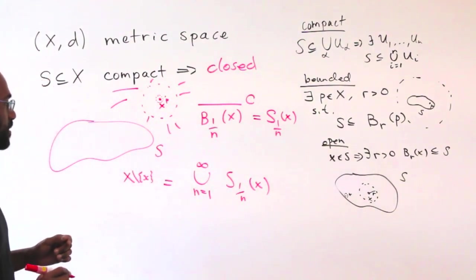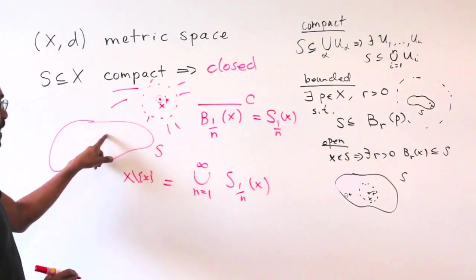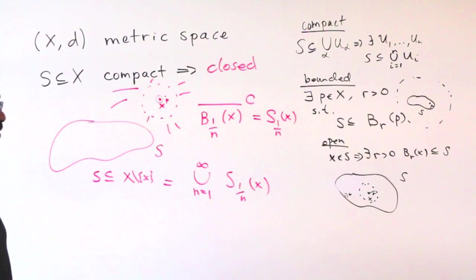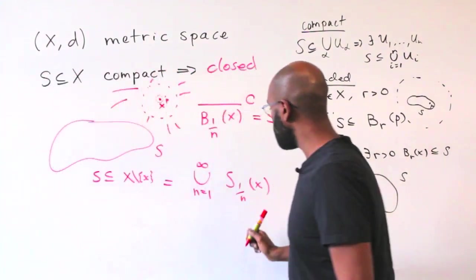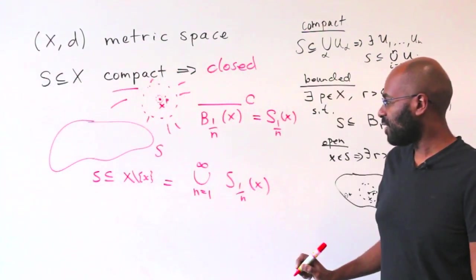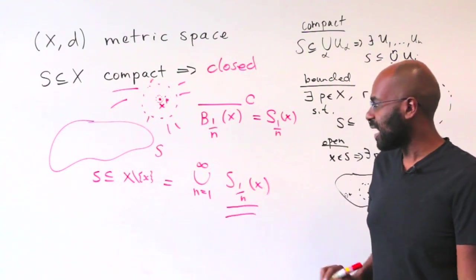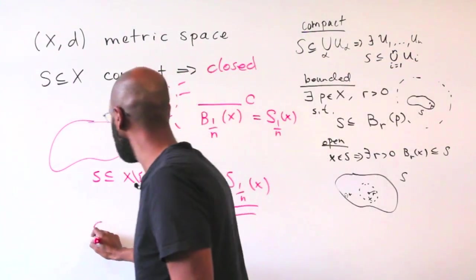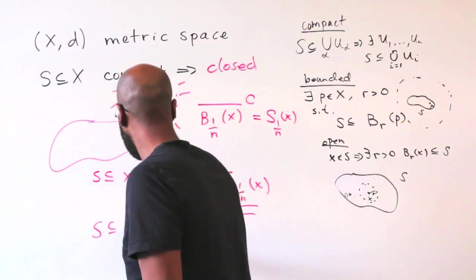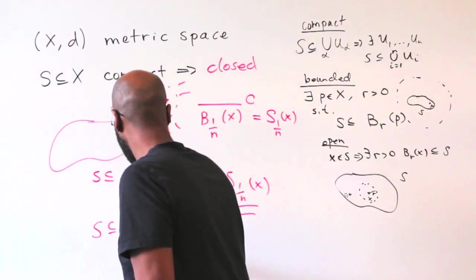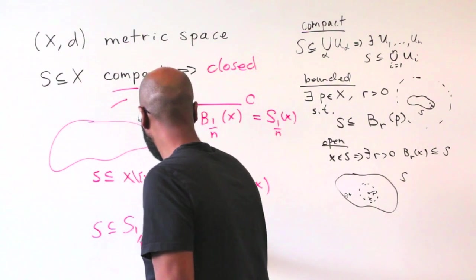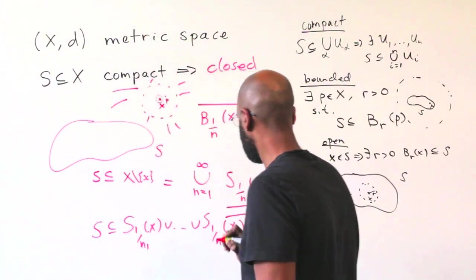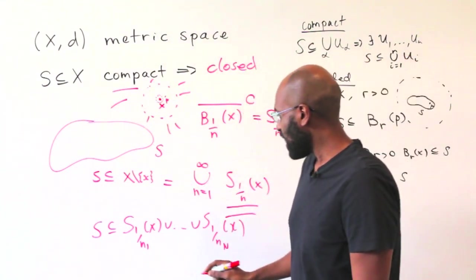Okay, but X itself does not lie inside of our set S. So S is a subset of this set here. So S actually sits inside of the union of this infinite number of open sets. But S is compact, so that means S sits inside of the union of a finite number of these. Let's call them S_1/N1(X) up to S_1/NN(X).